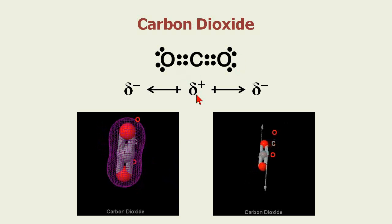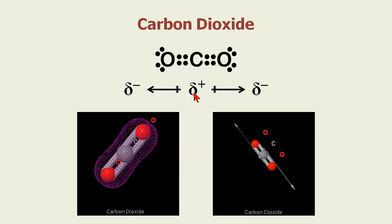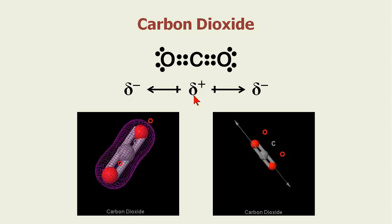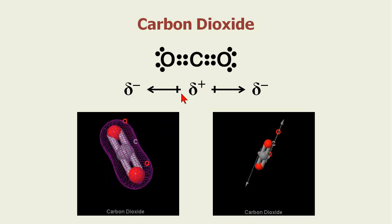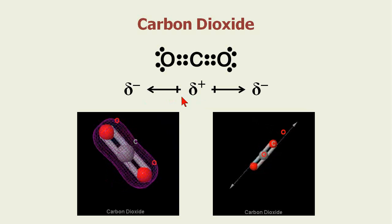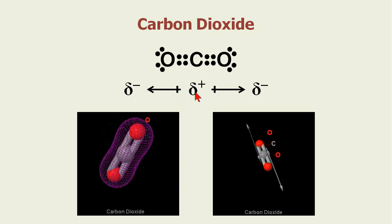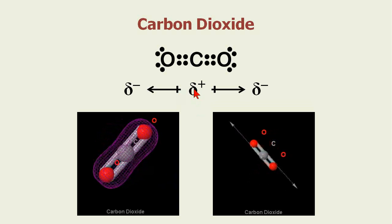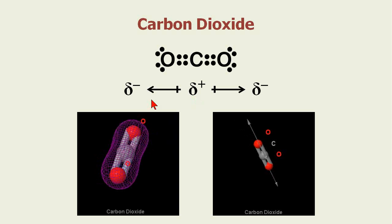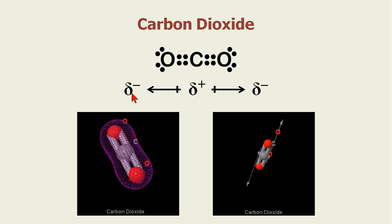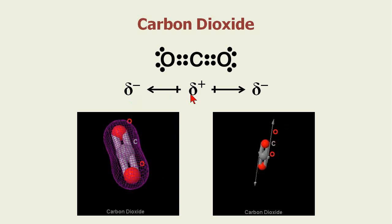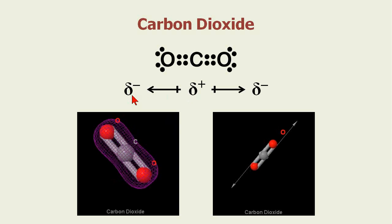We represent the electronegativity difference as a dipole. That's what this arrow with the little cross is. It goes from the positive, which is a plus delta—that's just a Greek little d for delta, Greek symbol—to a negative little d.